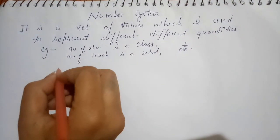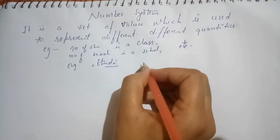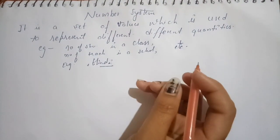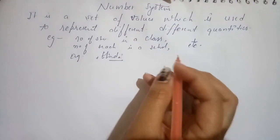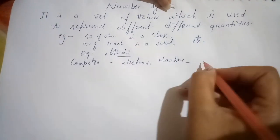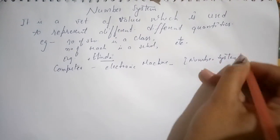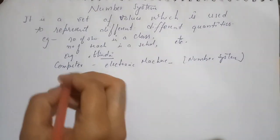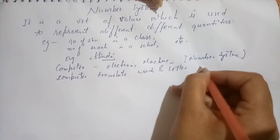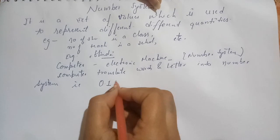Basically, number systems are used in our day-to-day life. Just as we people use certain languages like English, Hindi, and many more for communication through words and alphabets, we also need a medium to communicate with machines. A computer is an electronic machine, so it does not understand letters and words — it understands number systems.